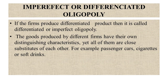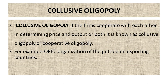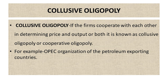In differentiated oligopoly, the goods produced by different firms have their own distinguishing characteristics, yet all are close substitutes for each other. For example, passenger cars, cigarettes, or soap. Next is collusive oligopoly: if firms cooperate with each other in determining price and output, it is known as collusive or cooperative oligopoly. An example is the OPEC organization — the Organization of Petroleum Exporting Countries — where firms formally agree on pricing and output levels, known as a cartel.